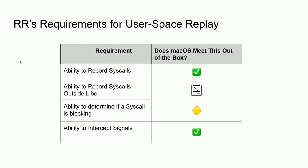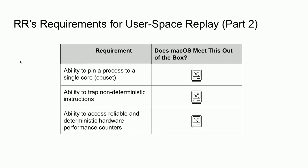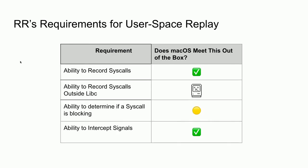RR was sort of the reference — another way to look at this talk is as a love letter to RR. Their paper clearly lays out hardware and OS design requirements. You need to be able to record syscalls, ideally even if they happen outside of libc. You need to be able to determine if a syscall is blocking. You need to intercept signals and replay them at the exact time they were delivered. You need to pin a process to a single core.